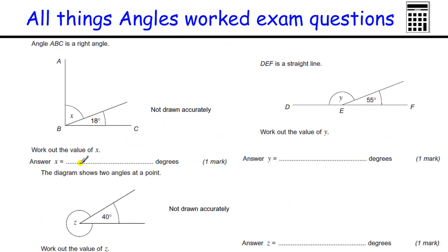Some basic angle questions using angle rules. This is a right angle, so we've got this whole thing adds up to 90. So X plus 18 equals 90, take away 18, and that's going to be 72.